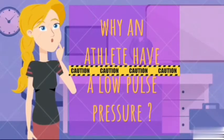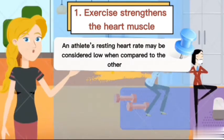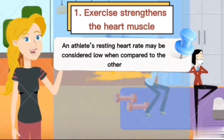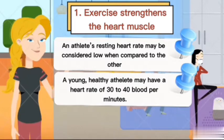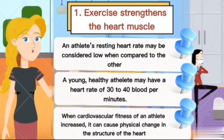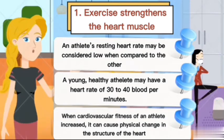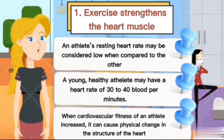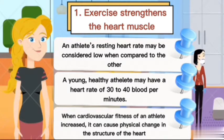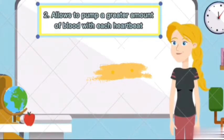Why do athletes have low pulse pressure? Firstly, an athlete's resting heart rate may be considered low when compared to others. Young, healthy athletes may have a heart rate of 30 to 40 beats per minute. When cardiovascular fitness of an athlete increases, it can cause physical changes in the structure of the heart, likely because exercise strengthens the heart muscles. Secondly, it allows the heart to pump a greater amount of blood with each beat.